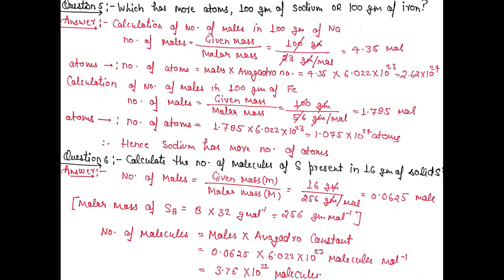Question number 5: Which has more atoms, 100 grams of sodium or 100 grams of iron? This is a very interesting question. The format may change but the question is quite easy. First of all, we will calculate the number of atoms in both cases. For 100 grams of sodium, number of moles equals given mass divided by molar mass, which gives 4.35 moles.